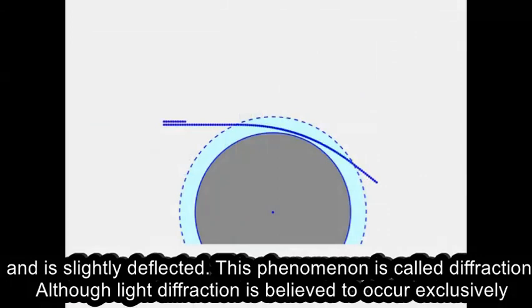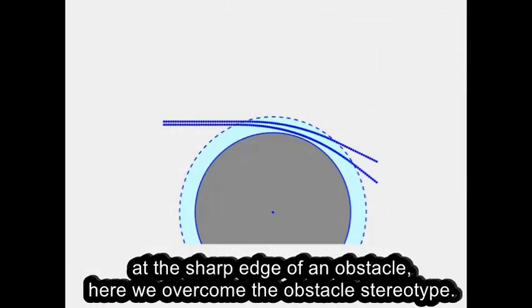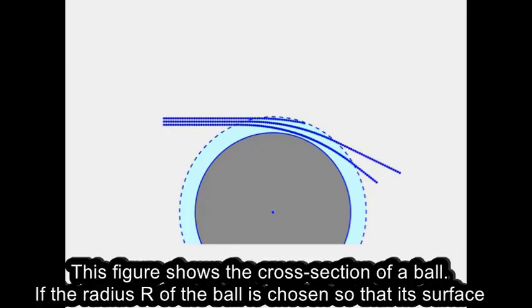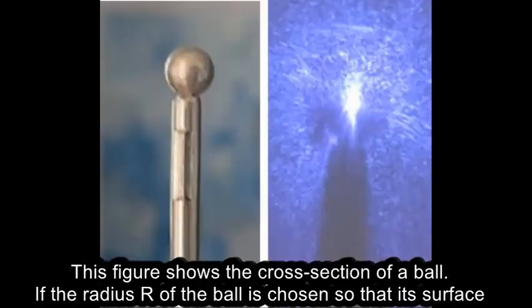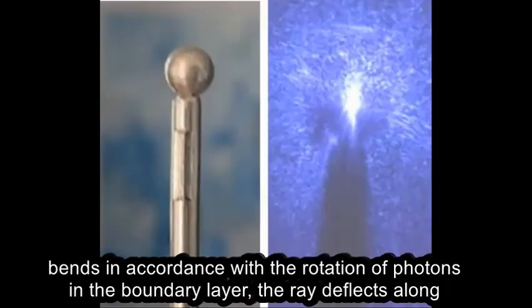Although light diffraction is believed to occur exclusively at the sharp edge of an obstacle, here we overcome the obstacle stereotype. This figure shows the cross-section of a ball. If the radius R of the ball is chosen so that its surface bends in accordance with the rotation of photons in the boundary layer,